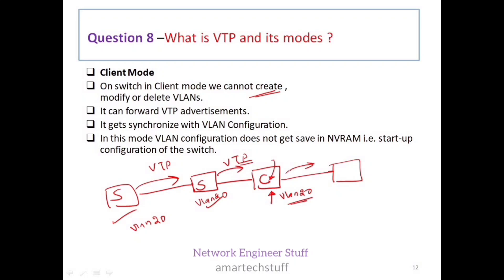The key difference is that in server mode you can create, delete, or modify VLANs, whereas in client mode you cannot. Because VLANs cannot be created or modified on the client, the VLAN configuration is not saved in NVRAM — it is not saved in the startup configuration of the switch in client mode.